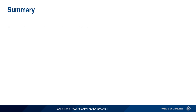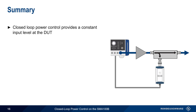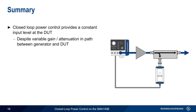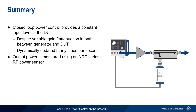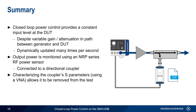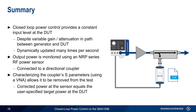Let's end with a brief summary. Closed-loop power control provides a means of maintaining a constant input power level at the device under test, even if the gain or attenuation in the path between the generator and the DUT changes. Power can be dynamically adjusted in real time, many times per second. An NRP series RF power sensor is used to monitor the power by means of a directional coupler. The coupler can be characterized using a VNA, and the resulting S-parameters can then be loaded into the power sensor, simplifying configuration by making the corrected power reading at the sensor the same as the user-specified target power at the DUT. Although this presentation has shown how to configure closed-loop power control on the SMA100B, please note that it is also supported on most other Rohde & Schwarz signal generators.